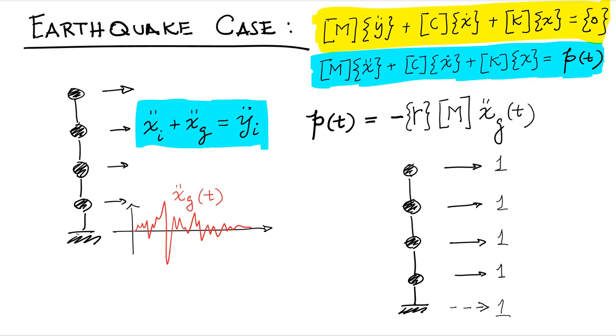we can simply bring the ground acceleration part to the right-hand side of the equation, and we obtain this term right here, minus R times M times XG double dot, XG being the ground acceleration. M is the mass matrix and R is what we call an influence vector. It's basically, what it means is how do the degrees of freedom of the structure move when you apply a unit displacement to the part of the structure that is being moved by the ground motion.